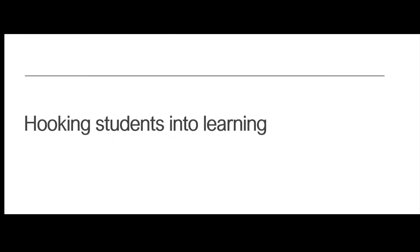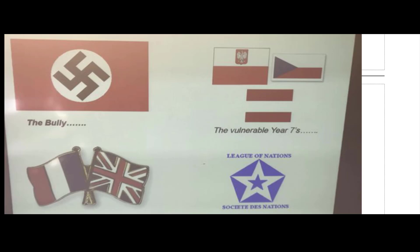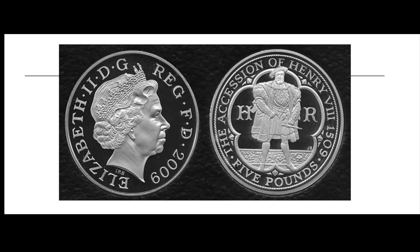I mentioned about hooking students into learning. This is one of my favourite starter tasks. I would present this to them at the start of the lesson and they would maybe do it in groups, then I would reveal who the people were in this particular scenario. This is a play on appeasement in the 1930s — it's asking them to decide what they would do, and then it links to what the nations actually did.